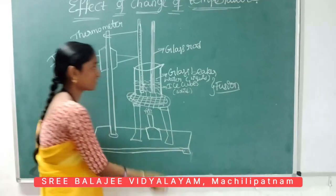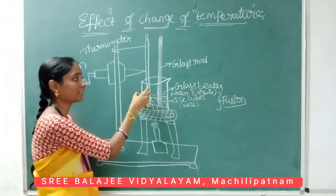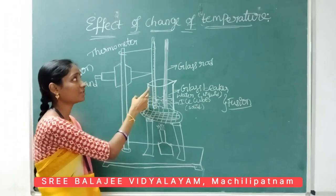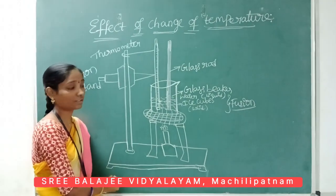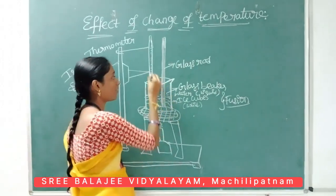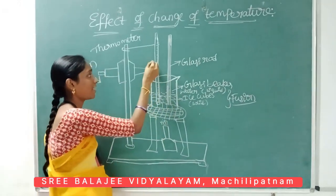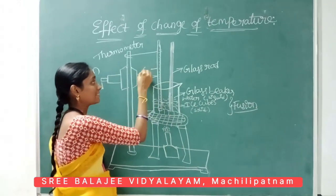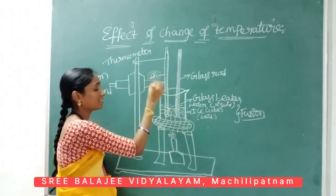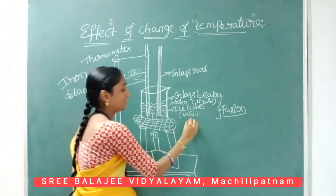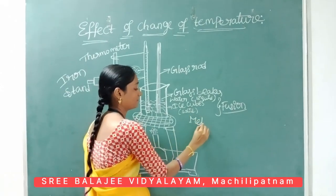In this situation we note the reading using the thermometer. For example, we have noted 60 degrees Celsius. This 60 degrees is called the melting point.